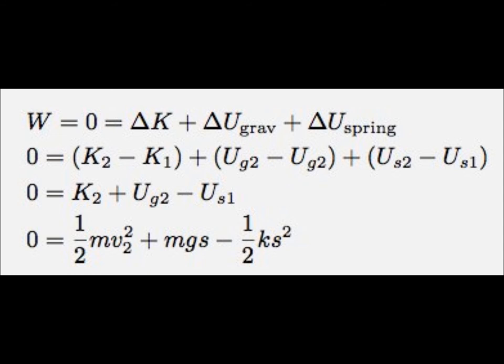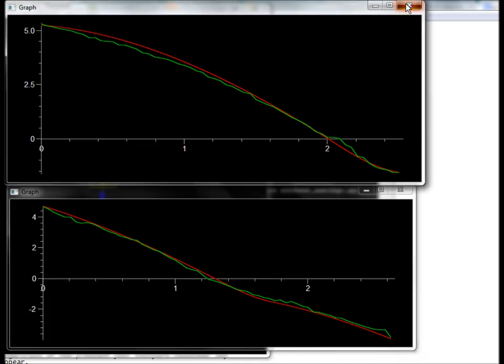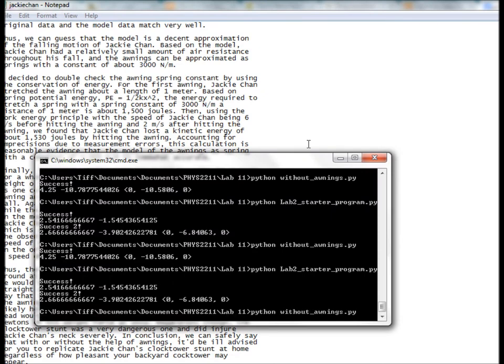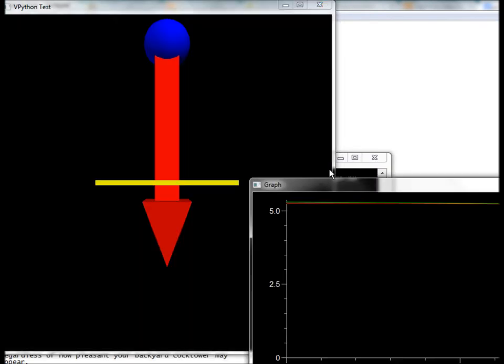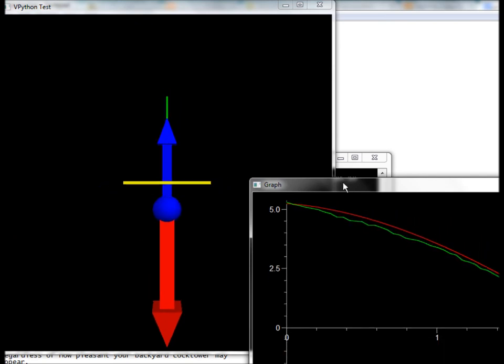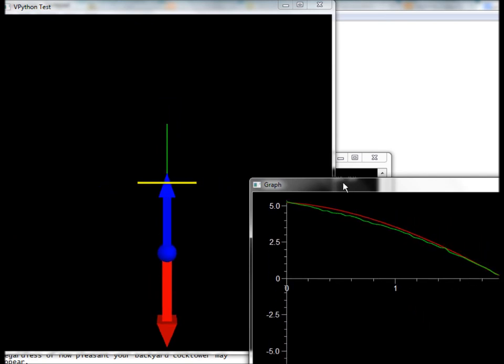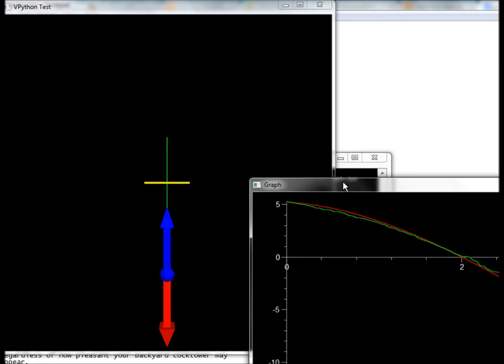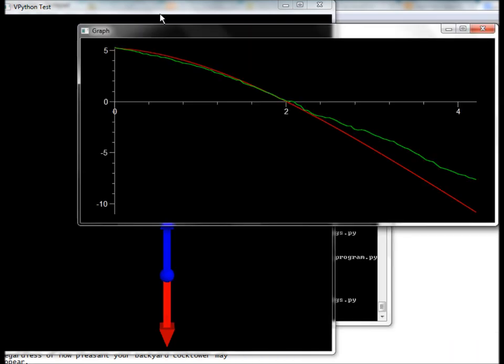Finally, I created another computer model to account for a what-if scenario where Jackie Chan falls the same height of 18 meters without the two awnings. I ran this model as one continuous fall with the origin still set as the first awning and plotted it against the observed distance for the whole fall. Again, the green line represents the observed data while the red line represents the model data.